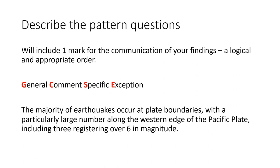When you get a question that asks you about describing the pattern or distribution of something, if it's a four mark question, remember one of those marks is just for communicating your answer in a logical order. We've talked about using the acronym GCSE: Give a general comment — is the trend increasing, decreasing, or fluctuating? Give some specific detail — a specific figure for a specific year or the highest or lowest value. Are there any exceptions or anomalies? Write your answer in a logical order.